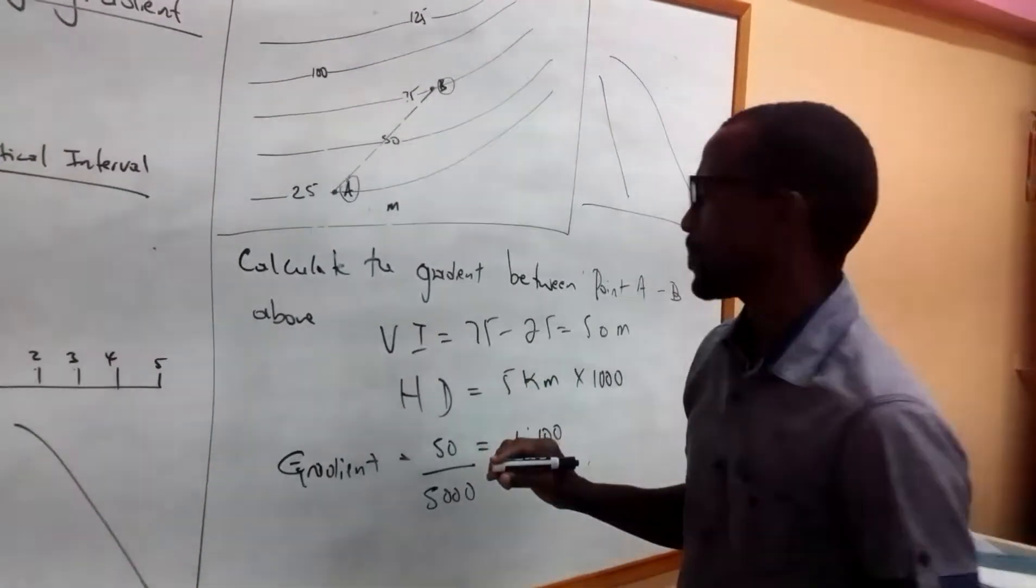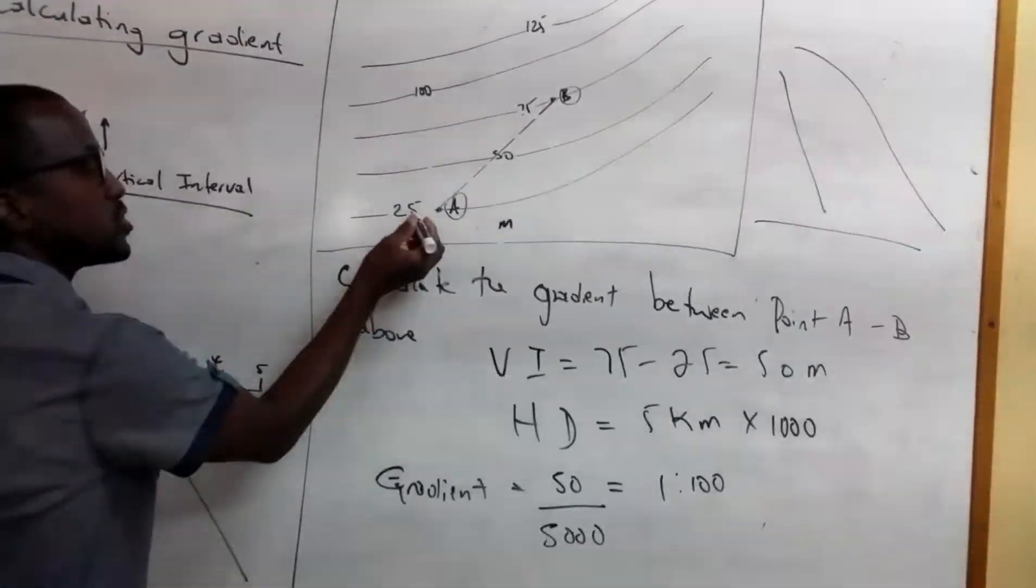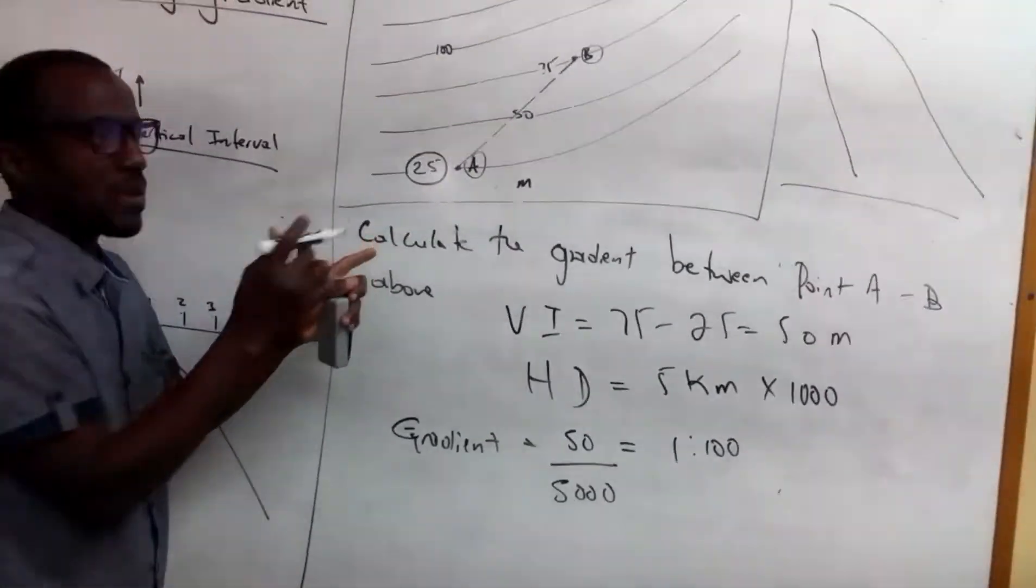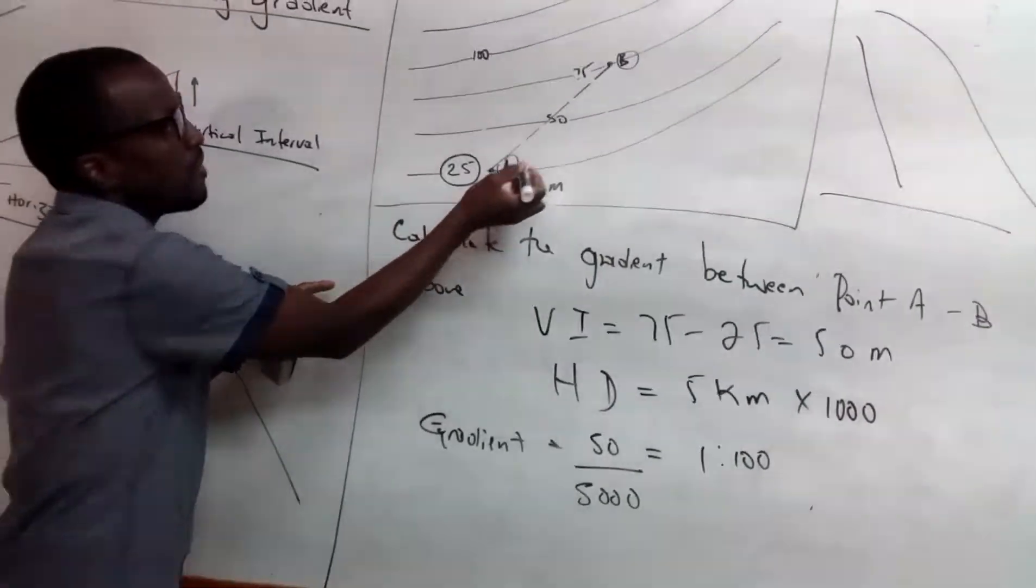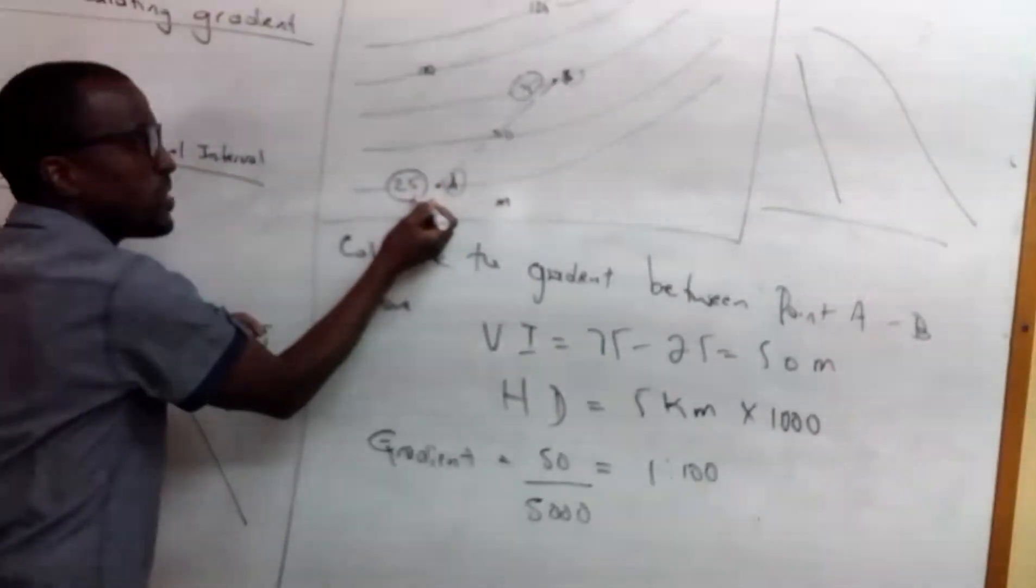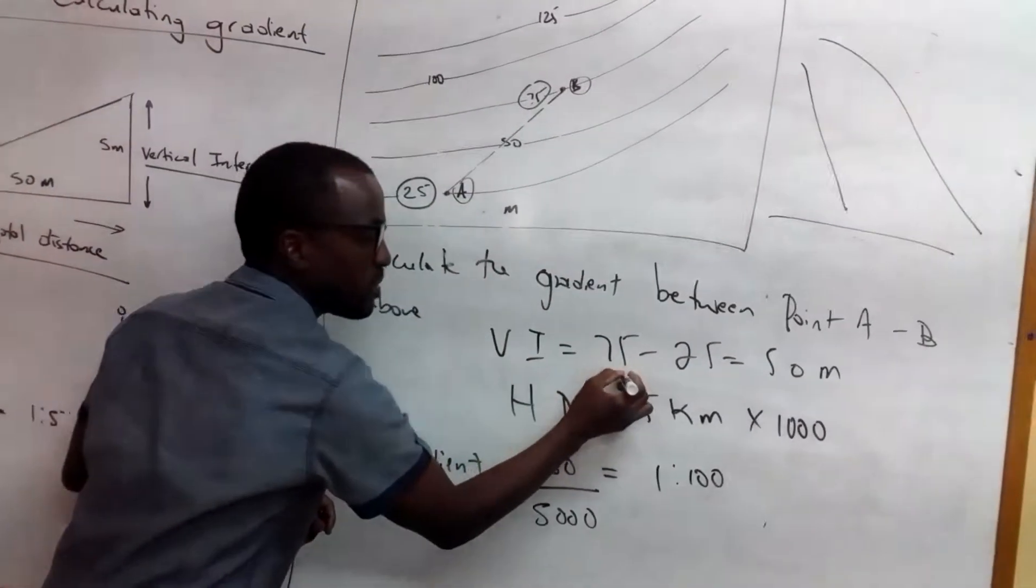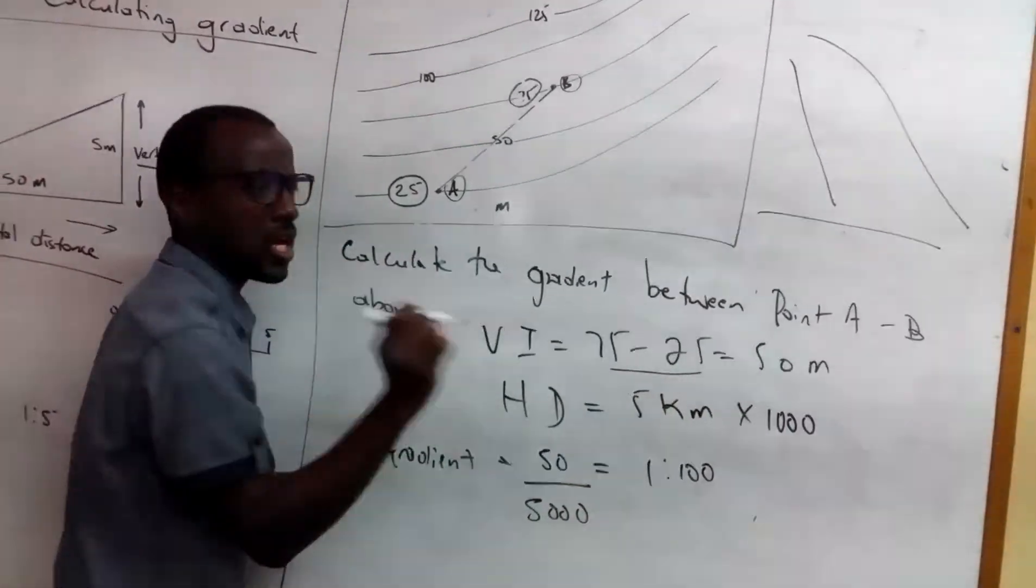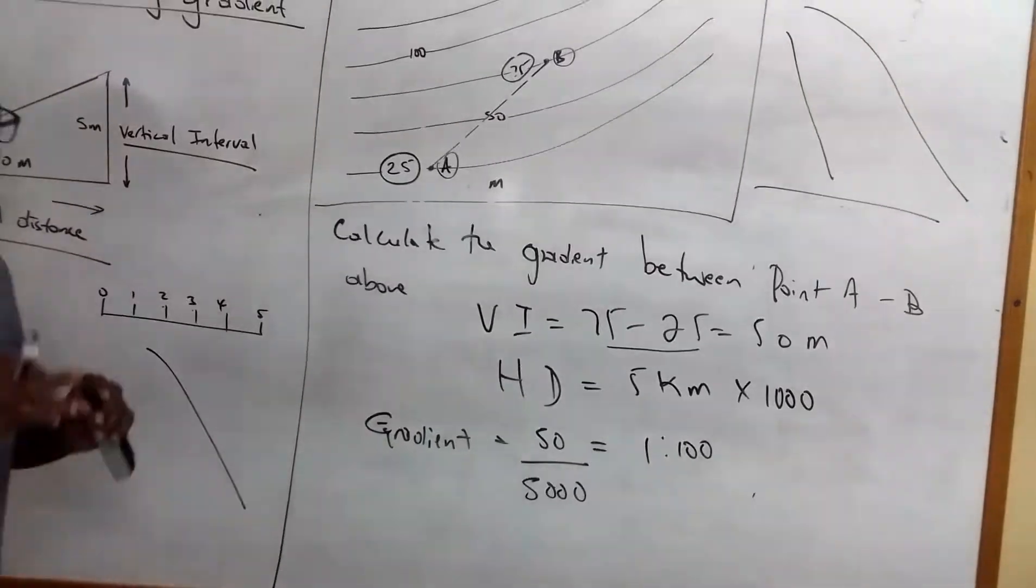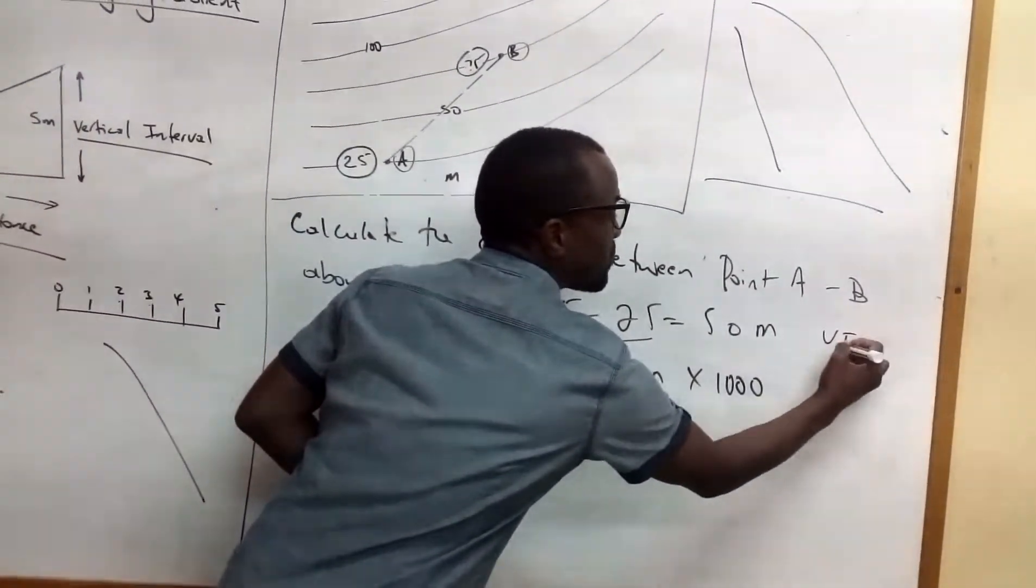So how do I find my VI? Now my VI would be, I would subtract my lower contour which is at point A from my upper contour which is at point B. So it is 25 minus 175, which here I have actually done it before, equals 50. Now that I have done that, what I need to do now, I need to calculate, so this would be my VI.